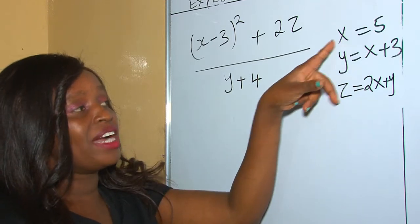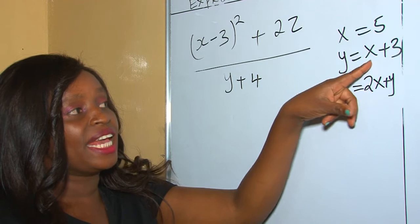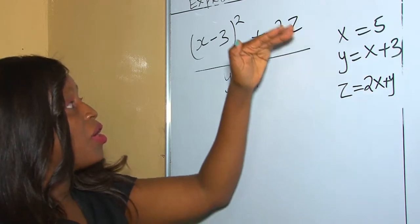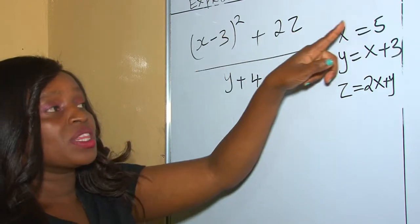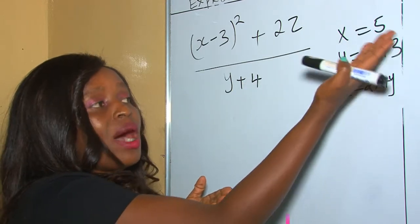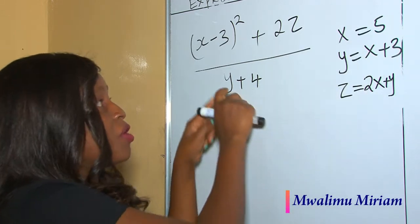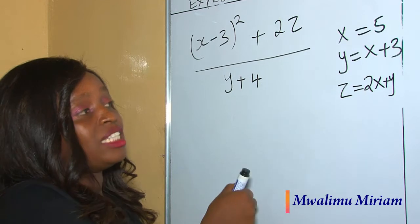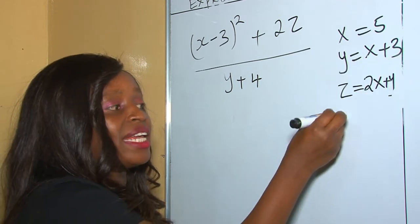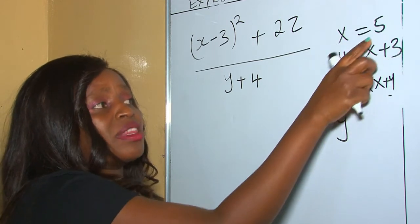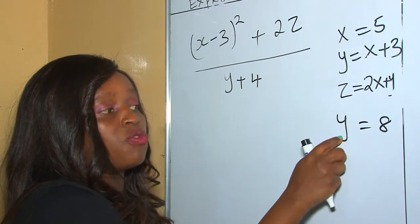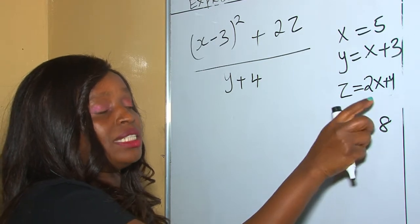In this next example, we are given the values: x is 5, y is x plus 3, and z is 2x plus y. Before replacing the letters in the question, notice that the value of y is not a plain number — we need to work it out first. y equals x plus 3, and since x is 5, then 5 plus 3 is 8, so the value of y is 8.